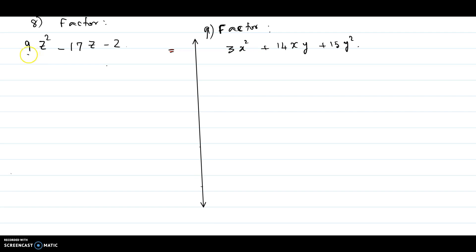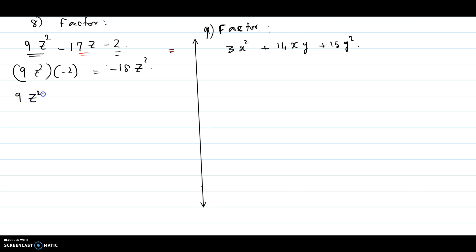You multiply 9z squared with negative 2, which gives negative 18z squared. Now you have to split the middle term, negative 17z, into a sum of two terms where the sum becomes negative 17z and the product becomes negative 18z squared. So 9z squared minus 17z can be written as negative 18z plus z, then minus 2.